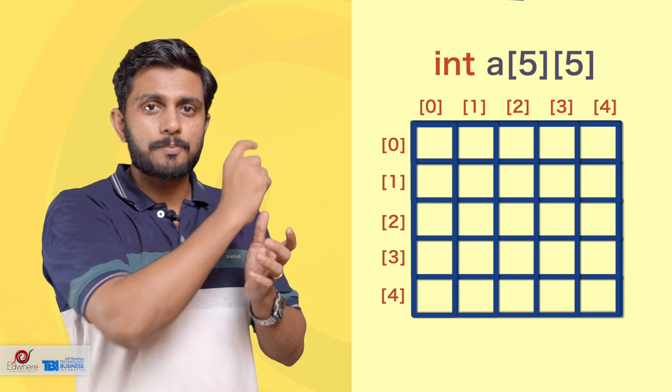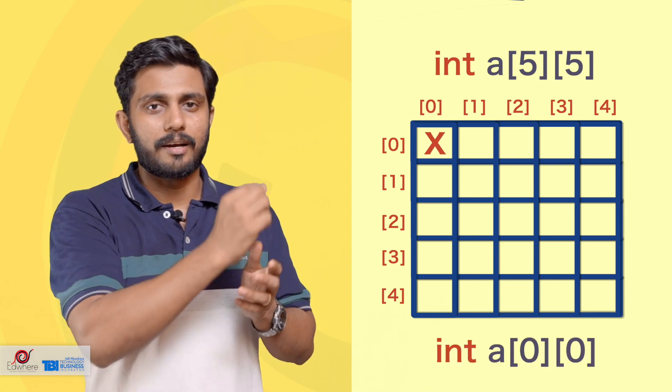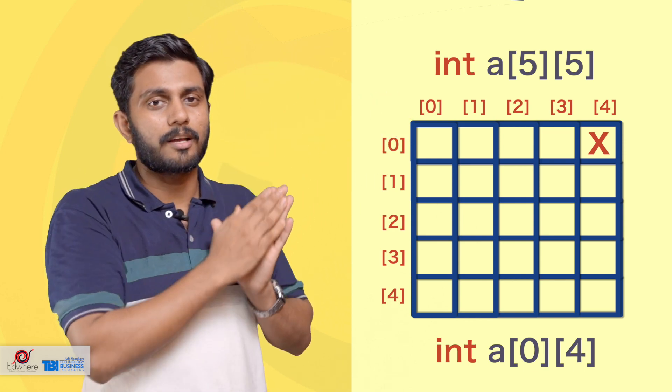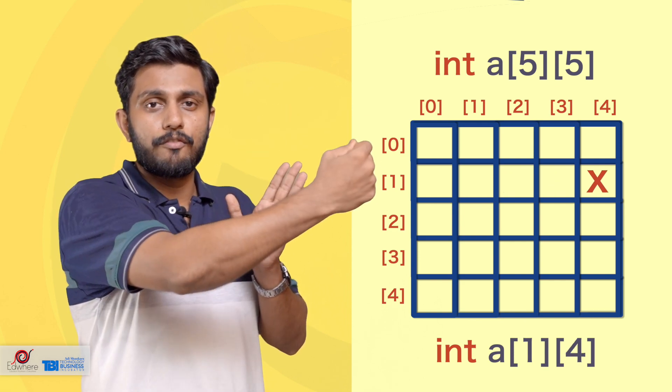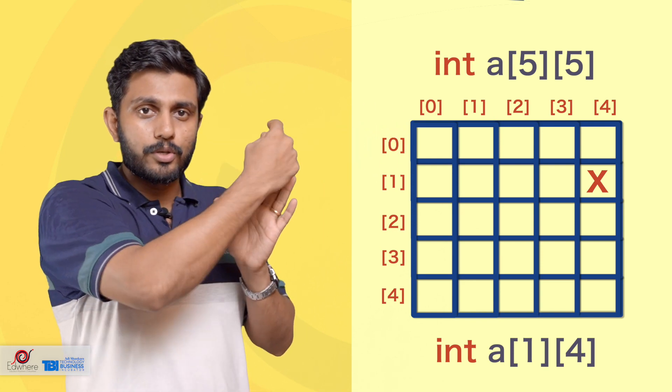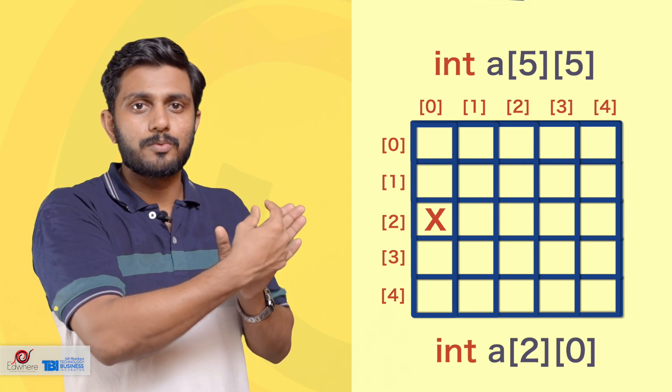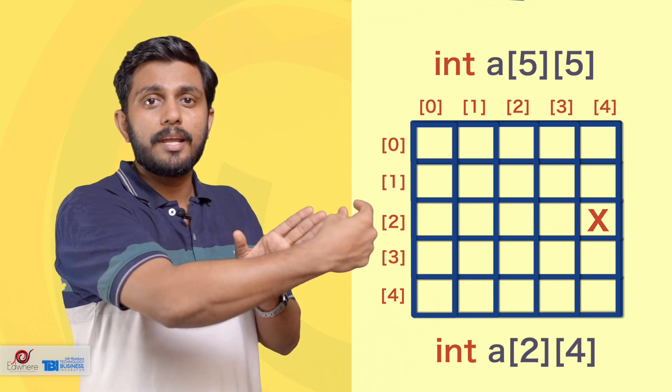We create a space called A[0][0], A[0][1], A[0][2], A[0][3], A[0][4]. Then A[1][0] continues the next row. We continue with A[2][0], A[2][1], A[2][2], A[2][3], A[2][4].